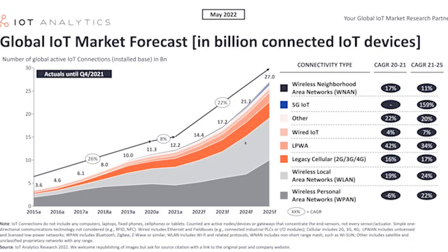This is a company called IoT Analytics that monitors the global Internet of Things market forecast. This chart tracks connected machines globally through an IoT platform technology. It stalled a bit during the pandemic, but it's back to projected growth of about 22% a year — which is really amazing when you think of all the different industrial things we can connect.